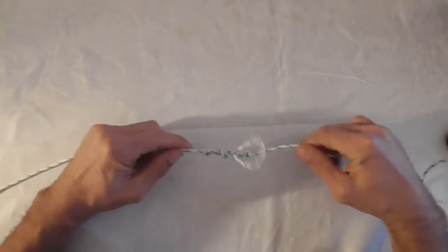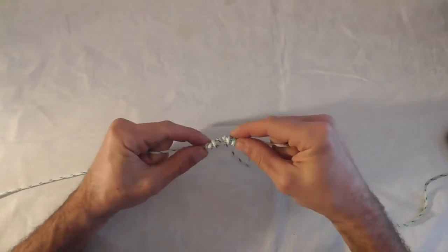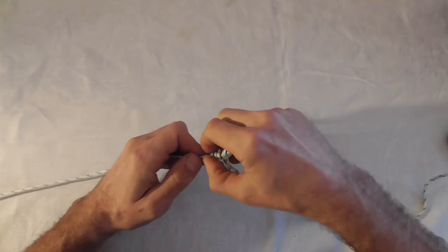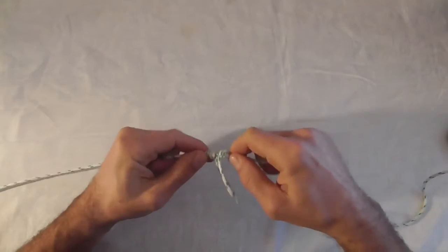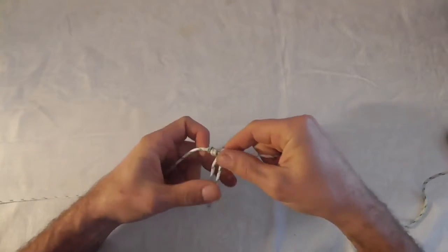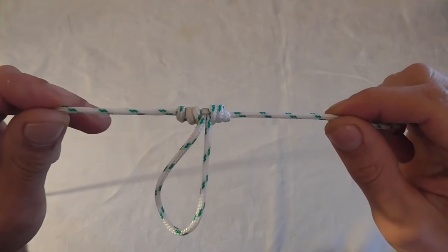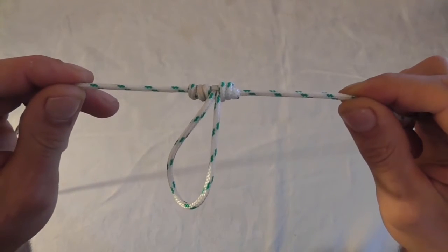So I'm just going to pull that and then pull on these two ends to get it tight. And there you have the dropper loop. Nice and easy.